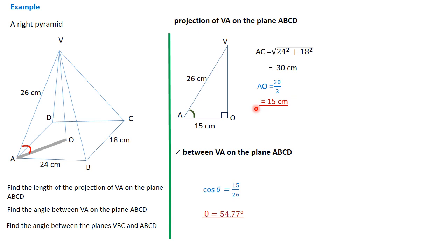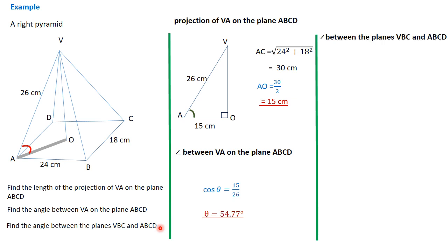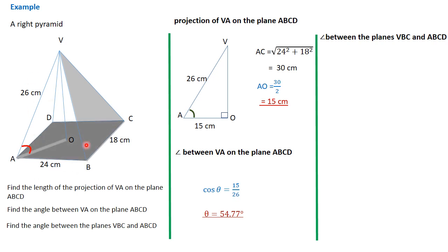Let's go to the last question. We're asked to look for the angle between the planes V,B,C and A,B,C,D. The plane V,B,C is an isosceles triangle, and the plane A,B,C,D is the base of the pyramid. The angle between two planes is the angle between two lines which are simultaneously perpendicular to the line of intersection of the two planes. These two planes intersect along the line B,C.